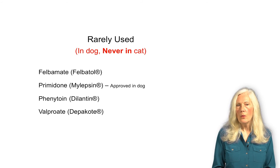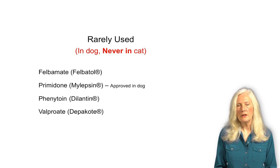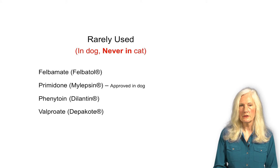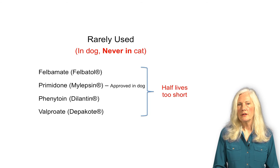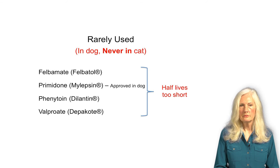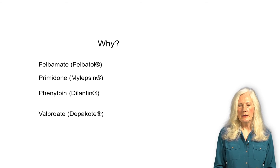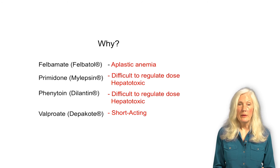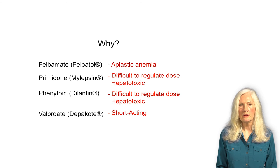There's a set of drugs not widely used that you may want in your recognition memory because they can still be found in some clinics. They're not used in cats and less commonly in dogs than other drugs, partly because of individual toxicities but largely because they are very short-acting. Felbamate can cause aplastic anemia; primidone is hepatotoxic; the dose of phenytoin is difficult to regulate and the drug is also hepatotoxic; and valproic acid is simply too short-acting to be useful. So these drugs are rarely used for long-term use in epileptic animals.